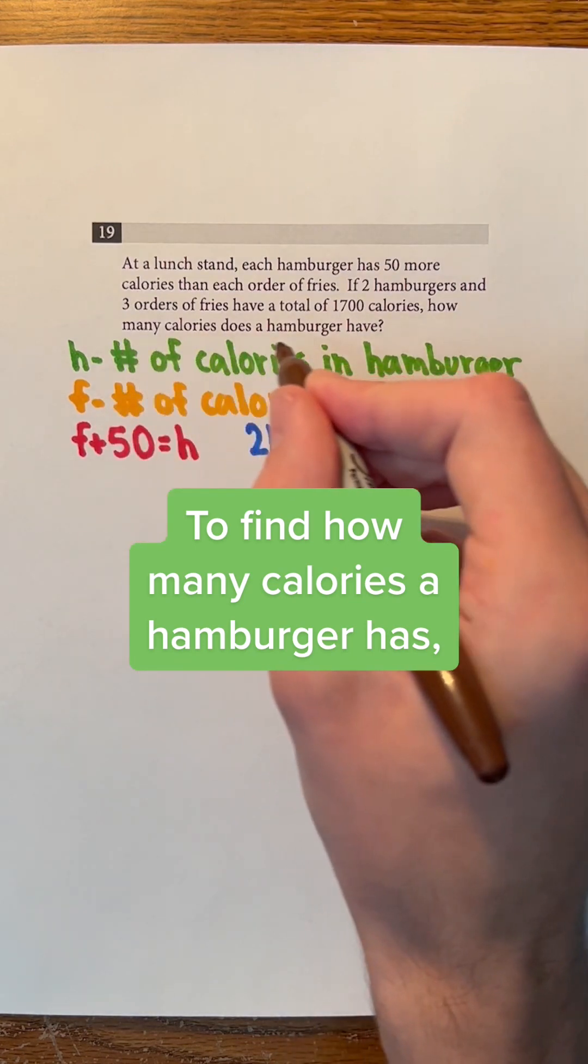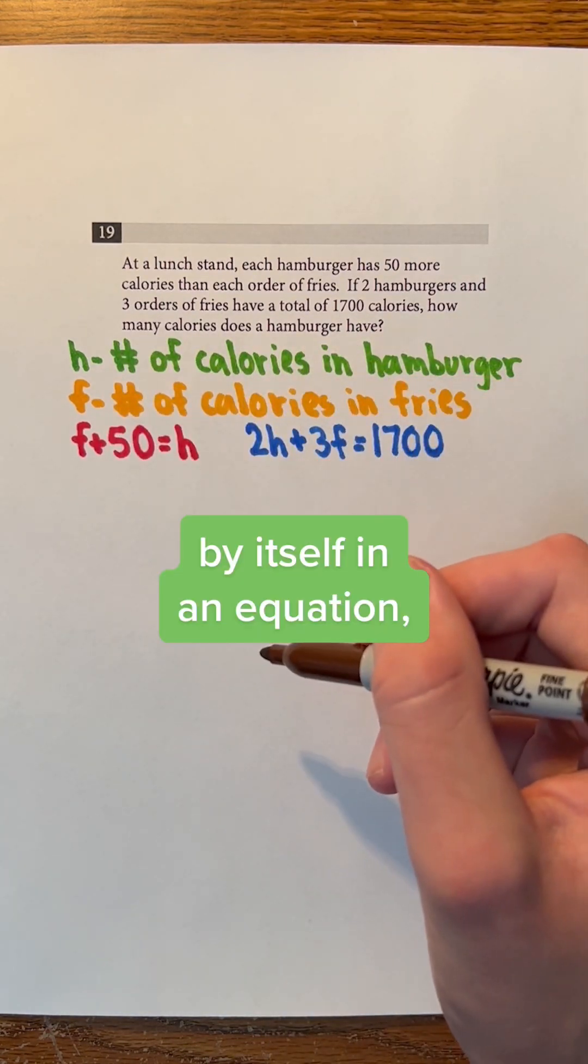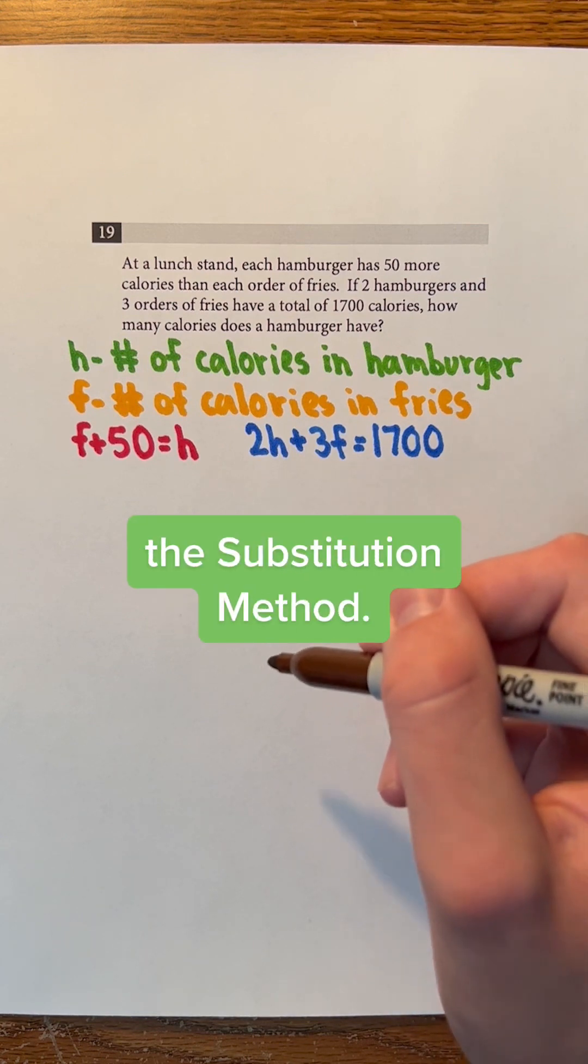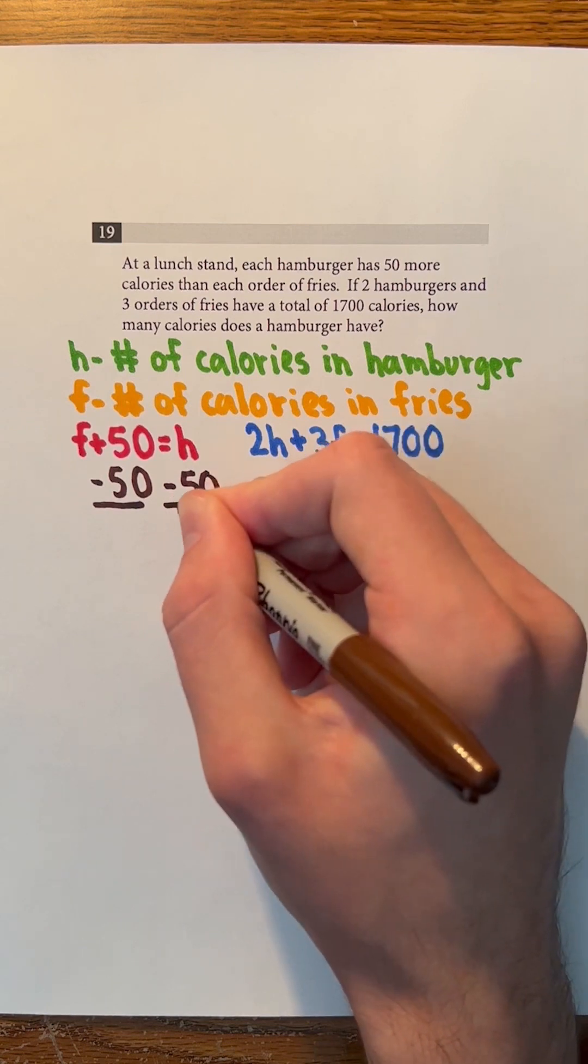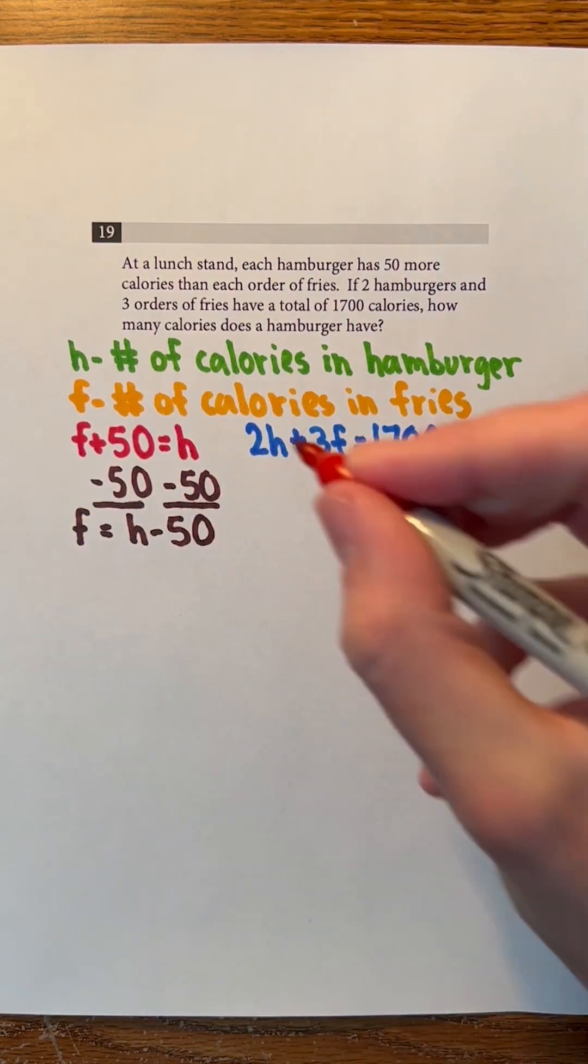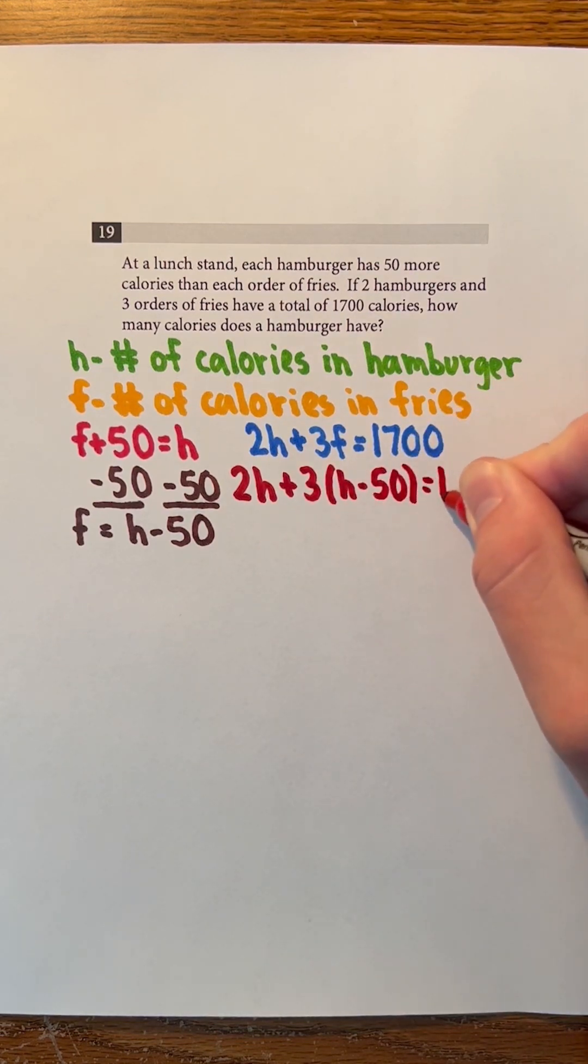To find how many calories a hamburger has, let's get H, the number of calories in a hamburger, by itself in an equation, and we can do this by using the substitution method. First, let's subtract 50 on both sides of F plus 50 equals H to see that F equals H minus 50. H minus 50 can be substituted for F in 2H plus 3F equals 1700.